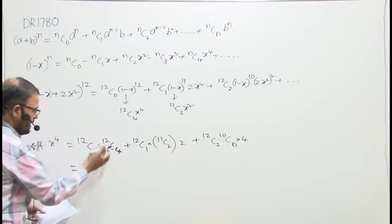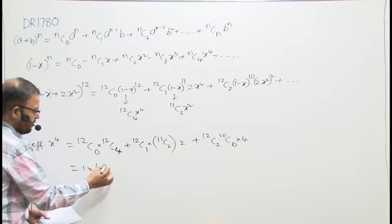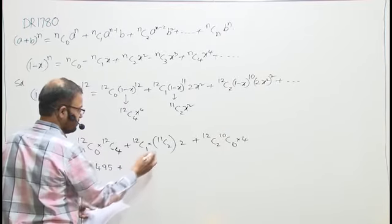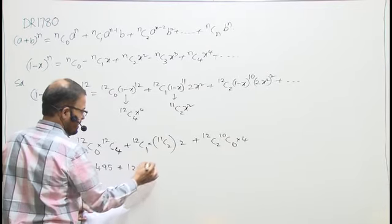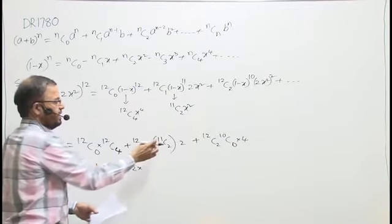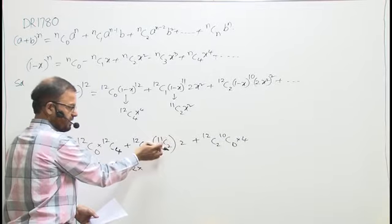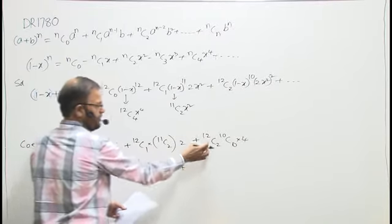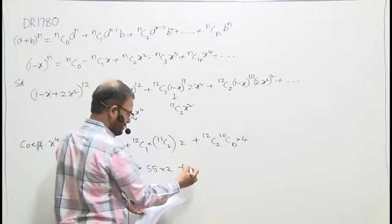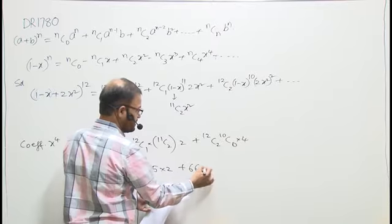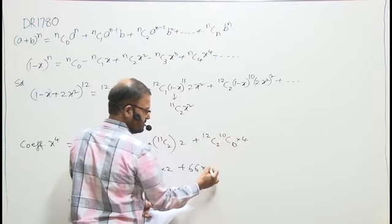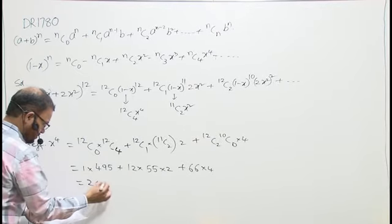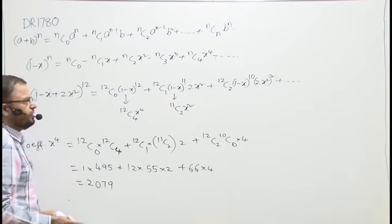Simplifying: 12C0 = 1 and 12C4 = 495. Next: 12C1 = 12, 11C2 = (11×10)/2 = 55, multiplied by 2 gives 12 × 55 × 2 = 1320. Then: 12C2 = (12×11)/2 = 66, times 10C0 = 1, times 4 = 264. Finding the sum: 495 + 1320 + 264 = 2079.